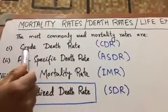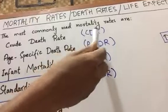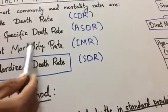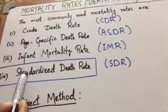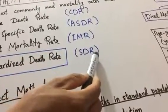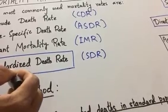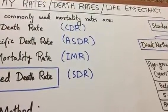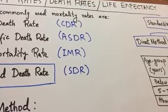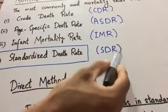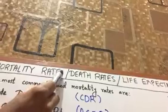First one is Crude Death Rate (CDR), Age-Specific Death Rate (ASDR), Infant Mortality Rate (IMR), Standardized Death Rate (SDR). These are four methods for calculating mortality rates. Now I am going to only focus on this method, Standardized Death Rate (SDR). Through this method I am going to calculate mortality rates.